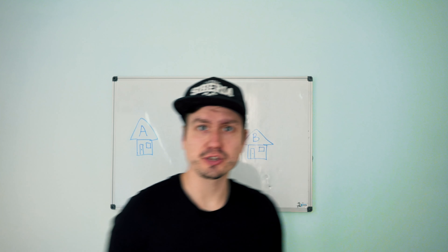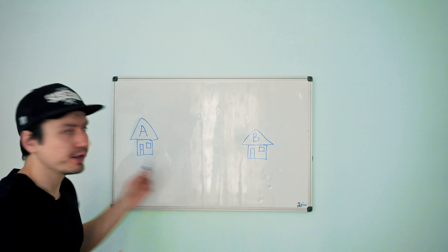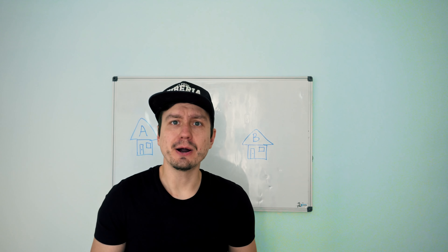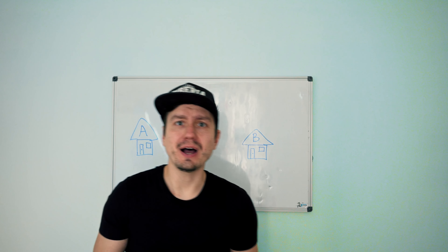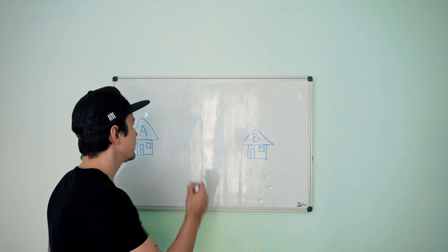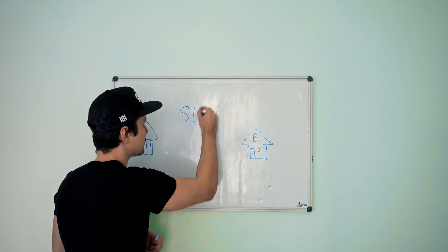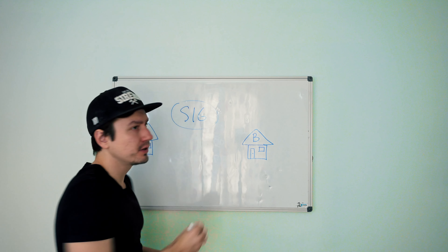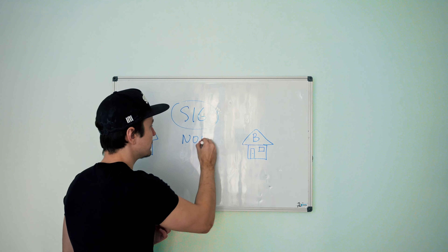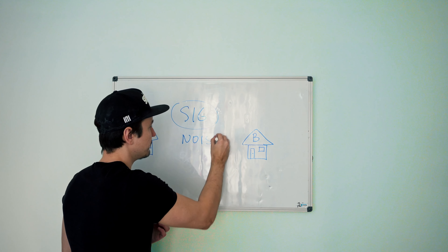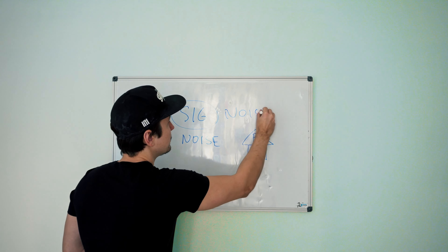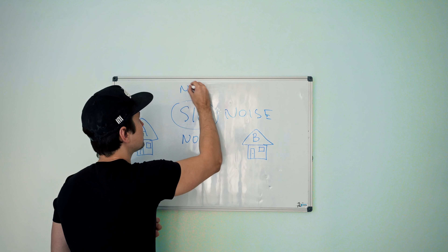So let's say we want to transmit a signal from building A to building B without using any wires. How are we going to do that? Well, let's first define what a signal is. A signal is something that we want, but we also have noise — and noise is something that we don't want, and noise is literally everywhere. It's everywhere around our signals.